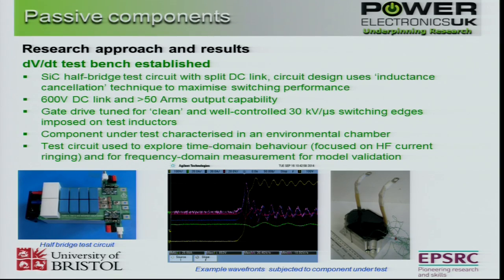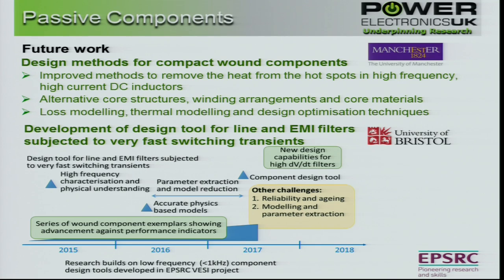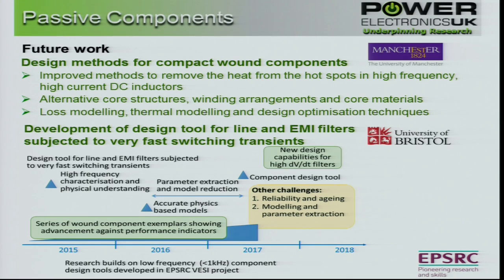We've got a test circuit where we're able to subject test components to very high, well-defined dV/dt edges at reasonable power levels, then use that to explore the time domain behaviour and the physical interpretation of the design of such devices. Moving forward, we're looking at developing a suite of design tools to feed into the cross-themed design tool and methods theme, coupled into converter design — thermal management, new core structures, new materials, loss modelling, thermal modelling, coupled design — and putting together a road map to understand design rules for components subjected to high dV/dt.